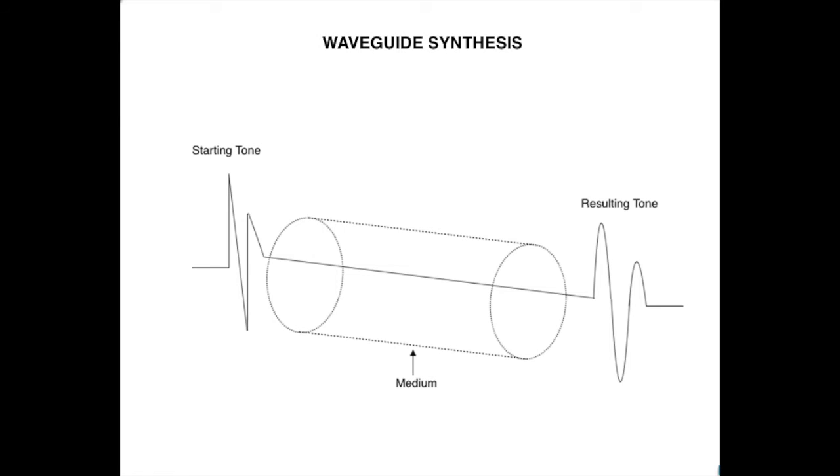Waveguide synthesis relates to how sound travels through a physical medium. For example, think of a clarinet. Once vibrations are created via the reed, the sound waves travel through the body of the clarinet and affect the resulting sound. This is what waveguide synthesis attempts to mimic.